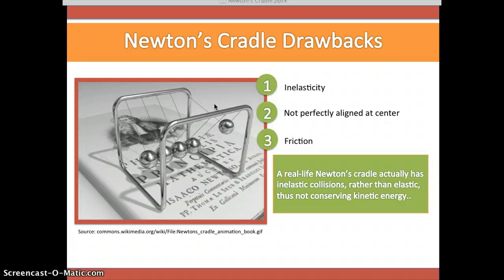Secondly, the balls must be imperfectly aligned at the center. This ensures that the balls can only swing in one plane, parallel to the crossbars. If the balls hit each other at some other point, energy momentum is lost by being sent in a different direction.